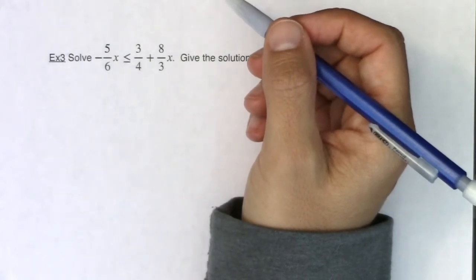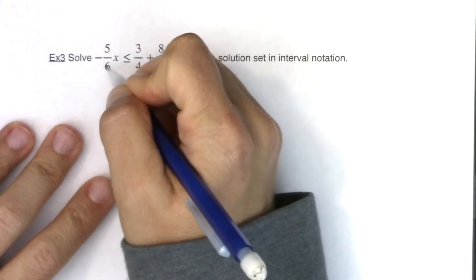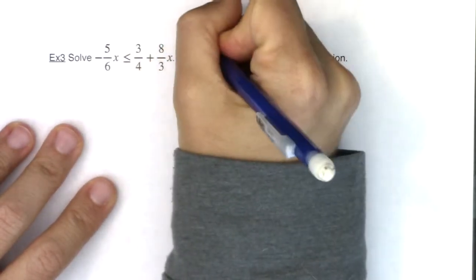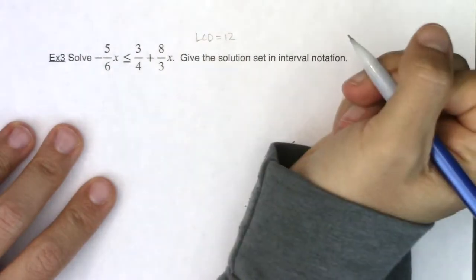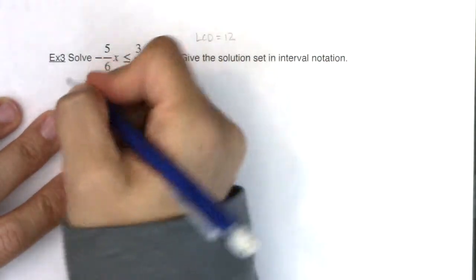We do have an inequality, so we can multiply by an LCD. So in this case, between my three denominators of 6, 4, and 3, my LCD is 12. So I'm going to multiply 12 to each term in my linear inequality.